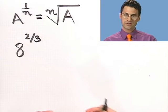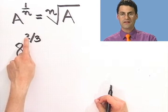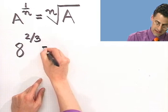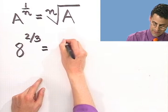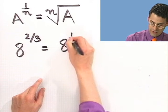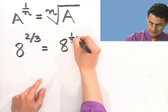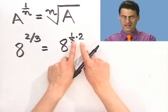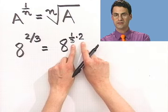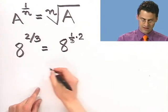And what I do, just to make things easy, is write it like this. 8 to the 1 third times 2. Notice that's just 2 thirds. But now I can use the laws of exponents we already saw.